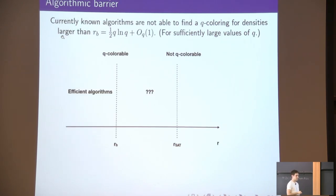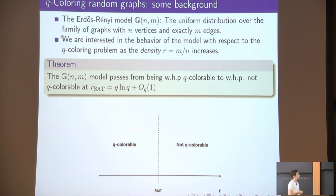Sorry, q is the average degree? So q here is the number of colors. Yeah, but the threshold for what? It's the density, which is basically... The average degree. Yeah, so the average degree is twice the density.